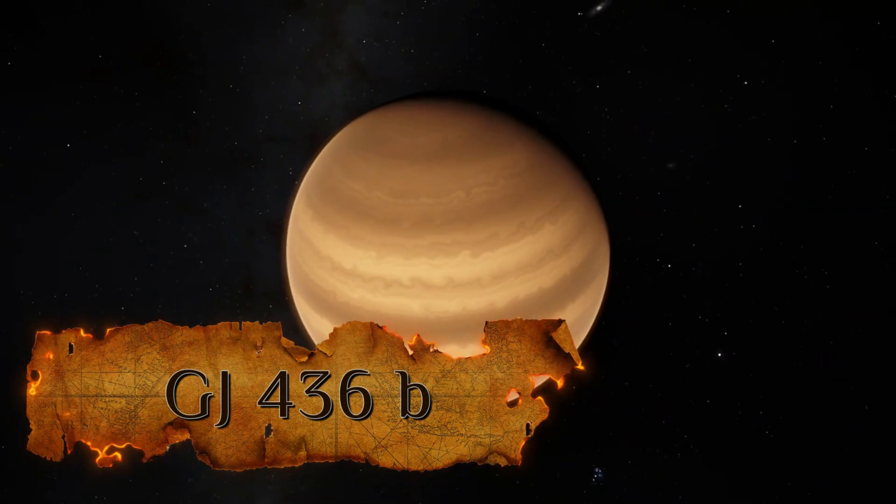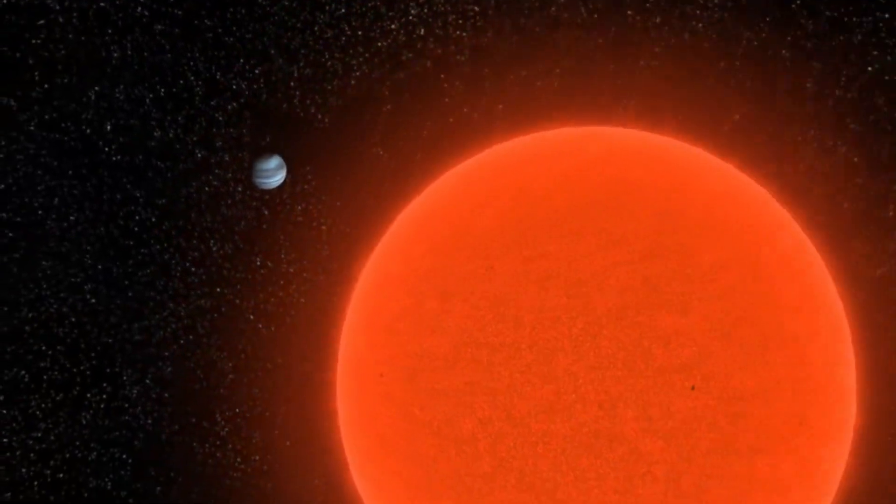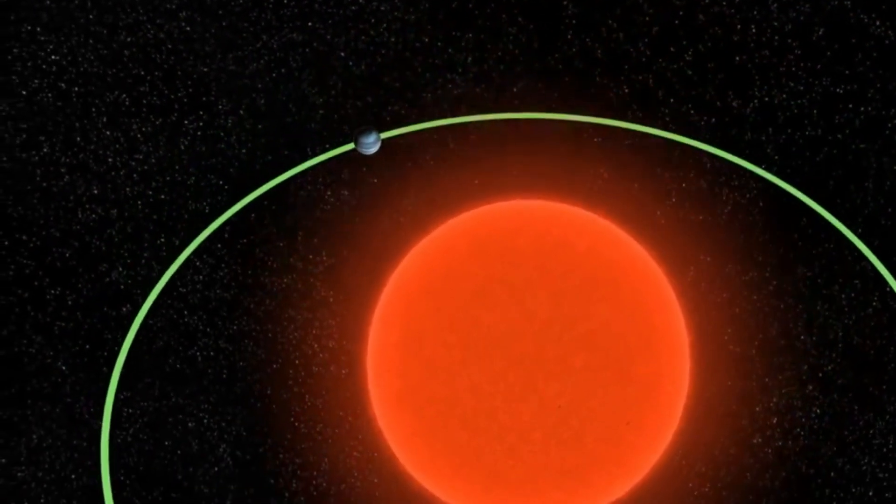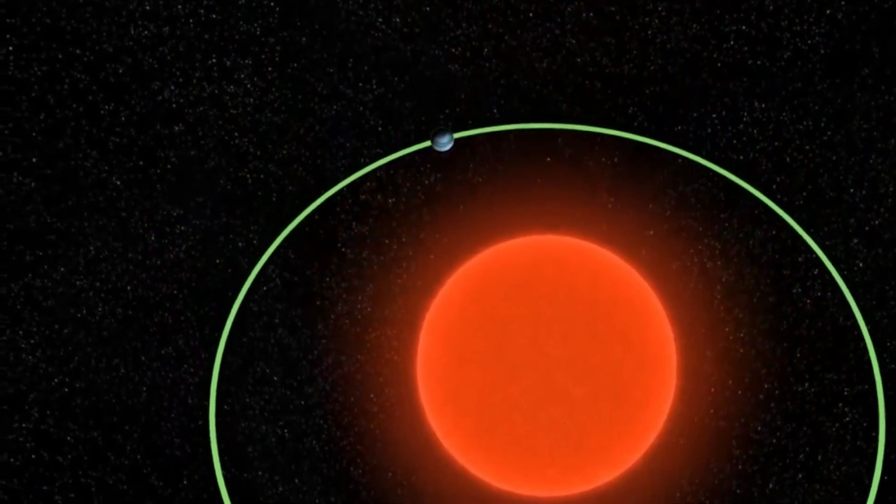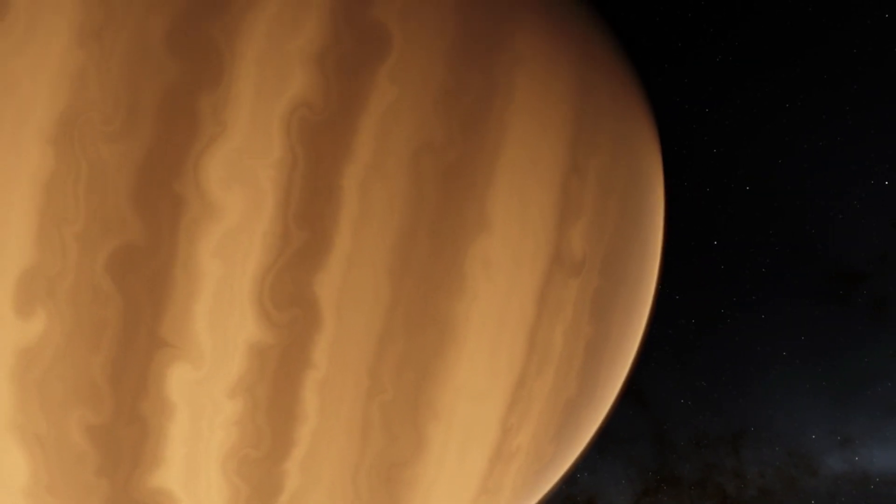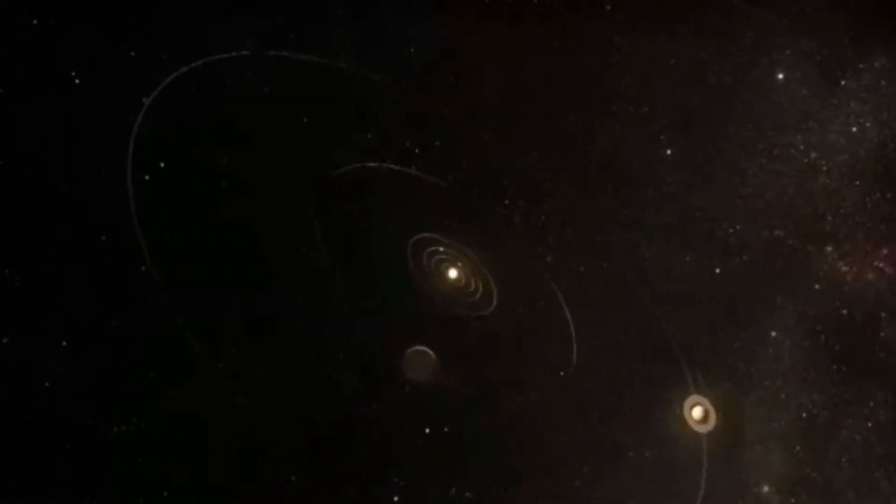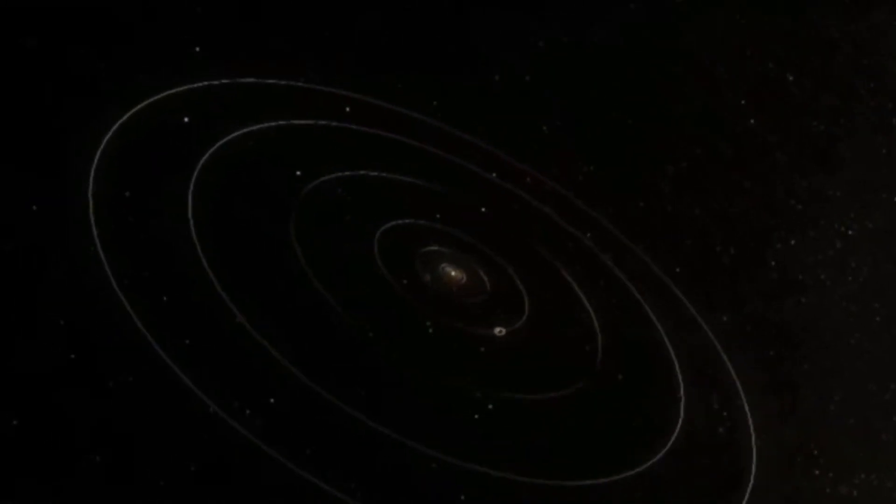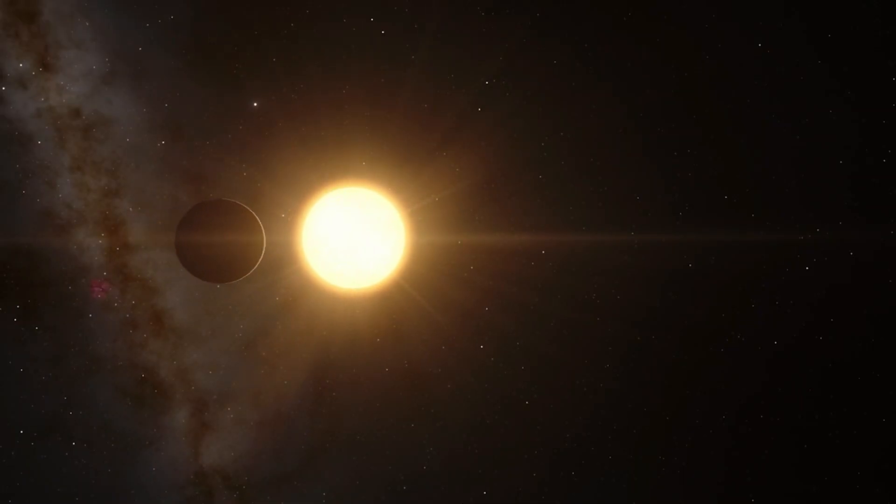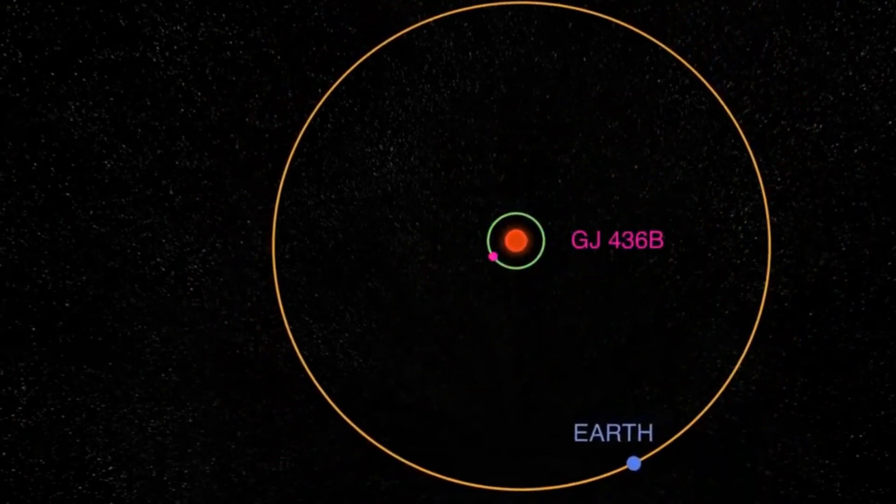Number 4: GJ 436b. This extrasolar planet has an orbital period 2.6 times longer than Earth, making it about the same size as Neptune. This puzzle is best described as one of the strangest contradictions we know. Mercury is 36 million miles from the Sun, but GJ 436b is only about 2.5 million miles from its star. This world is 30 light years from Earth.